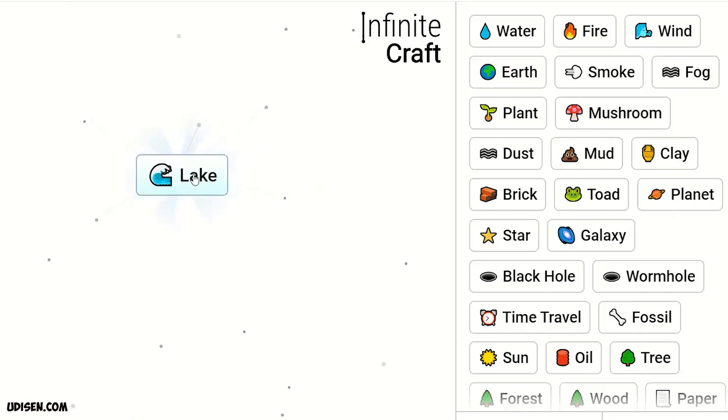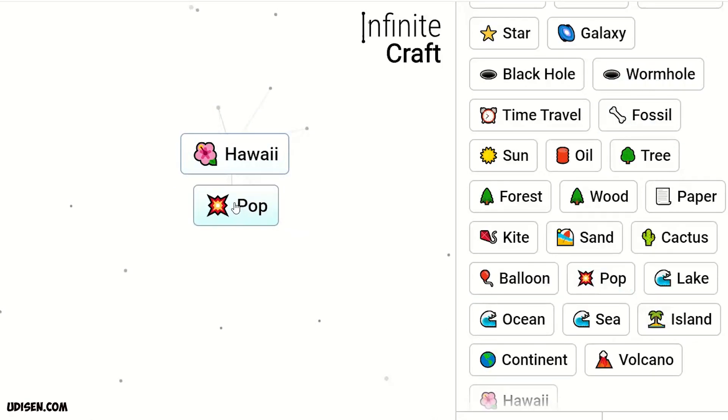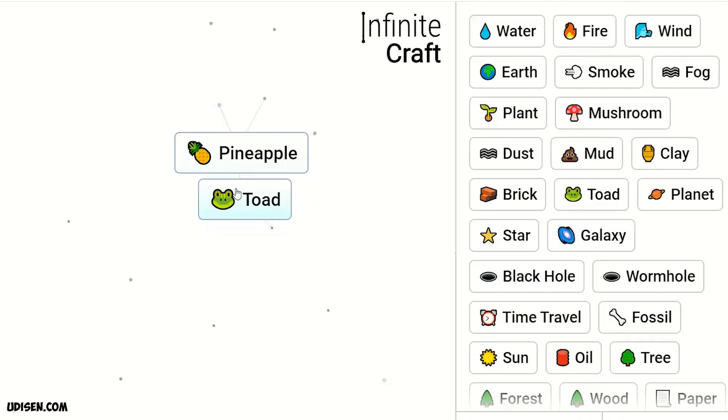Combine two water makes lake. Two lakes make ocean. Two oceans make sea. Sea and earth makes island. Two islands make continent. Leave continent here. Two fire makes volcano. Volcano and continent makes Hawaii. Hawaii and pop makes pineapple. Pineapple and toad makes fruit. Fruit and black hole makes gravity.